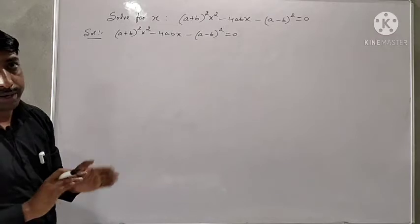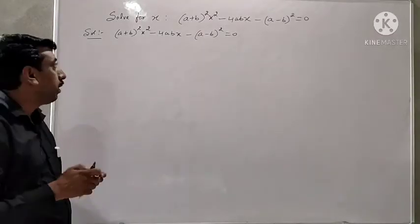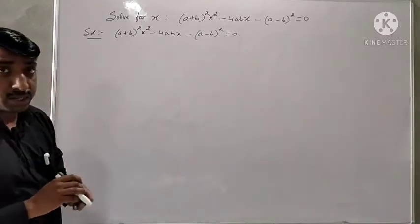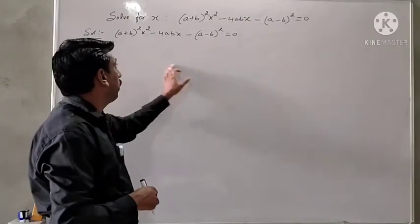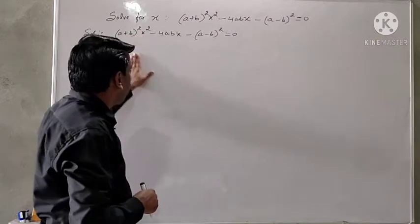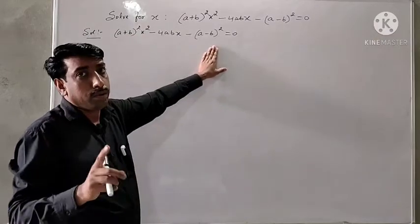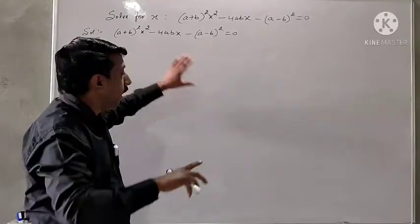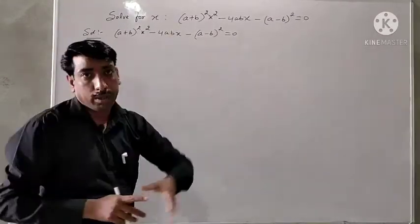In order to factorize any quadratic equation, we split the middle term into two parts such that their product equals the product of the coefficient of the quadratic term and the constant term, and when we add them back, we get the linear term.